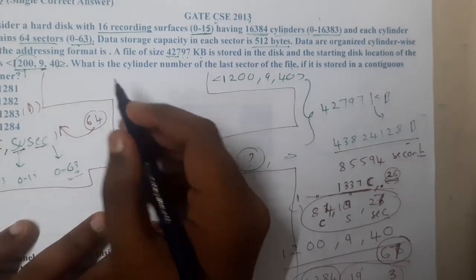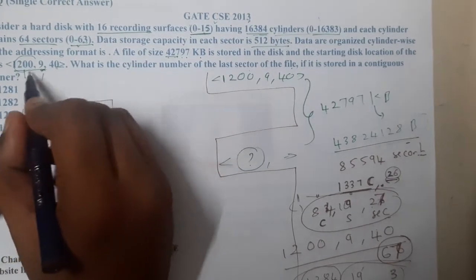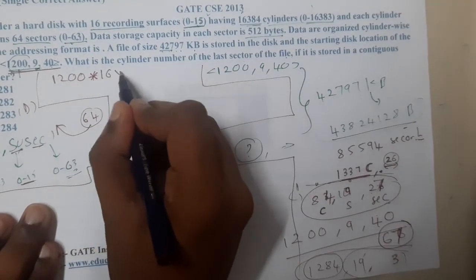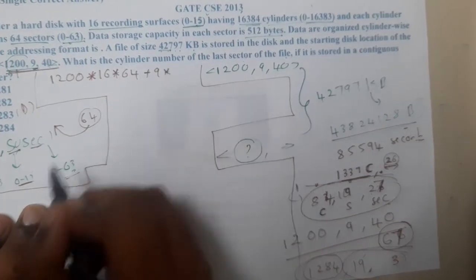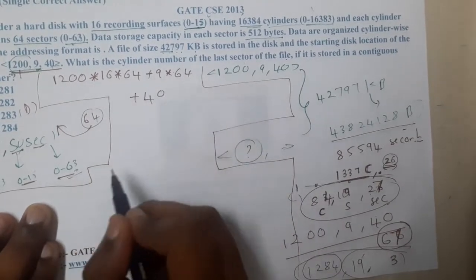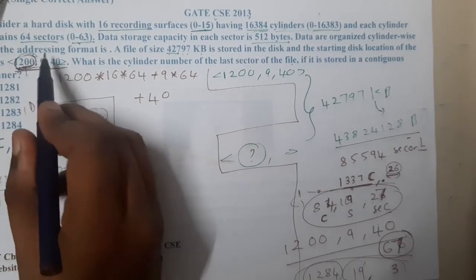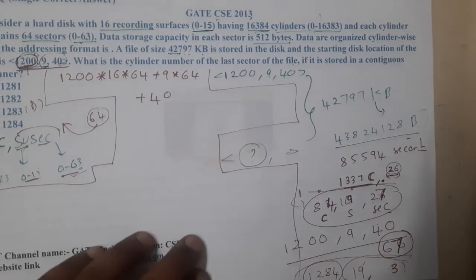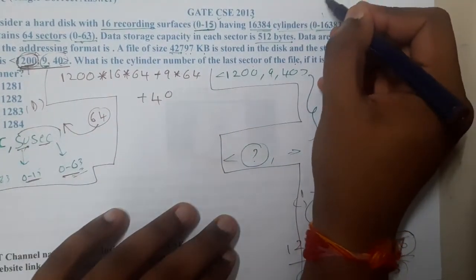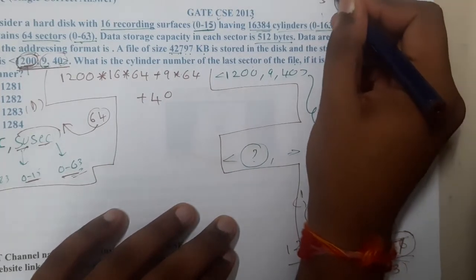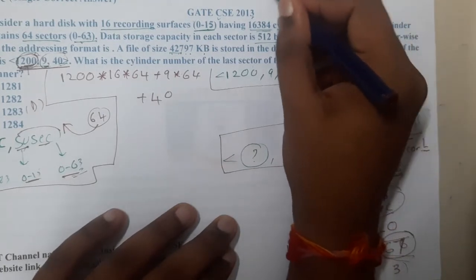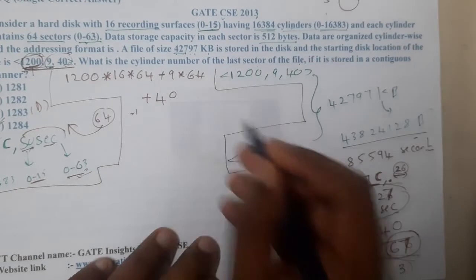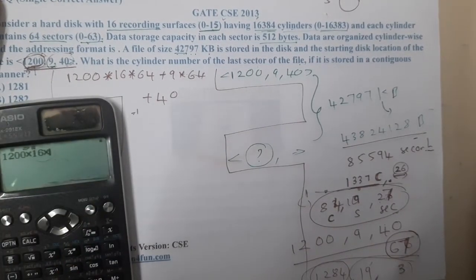The current location given is (1200, 9, 40). To find the absolute sector number, multiply the cylinder by surfaces-per-cylinder by sectors-per-surface, then add the surface contribution, then add the sector offset: 1200 × 16 × 64 + 9 × 64 + 40. This works because as sectors fill, a surface fills; as surfaces fill, a cylinder fills — that's why we back-track this way.